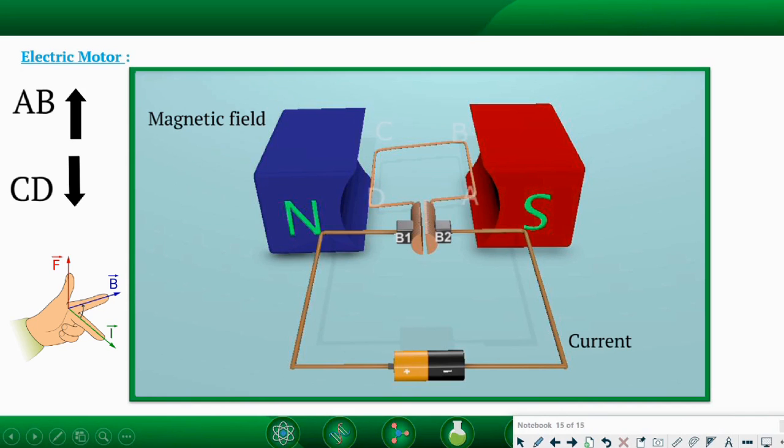After half a turn, the coil is now positioned as CDBA and the split ring has changed its contact from B1 to B2. The direction of current in the coil is now DCBA. To figure out the direction of rotation,